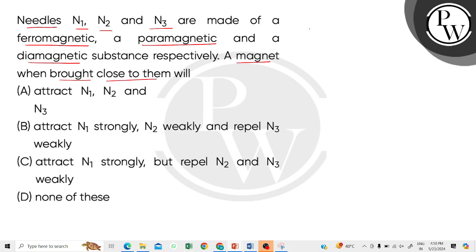So children, we have N1 which is made from ferromagnetic substance, N2 is made up of paramagnetic substance, and N3 is made up of diamagnetic substance.